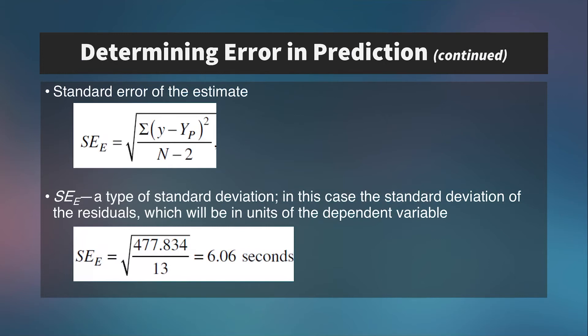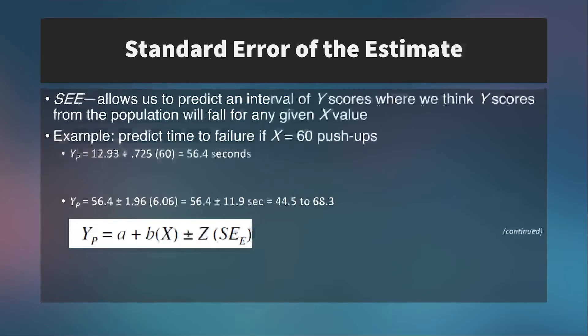We can quantify the amount of error in a dataset using the Standard Error of the Estimate, or SEE. The SEE has a more complex formula but can be thought of as a type of standard deviation — specifically, the standard deviation of the residuals between predicted and actual values — and it will be in the units of the dependent variable. The SEE is similar to the standard error of the mean, but instead of constructing a confidence interval around a calculated mean, it allows us to predict an interval of Y scores where we think population Y scores will fall given any value of x.